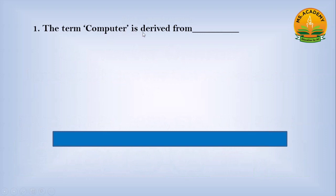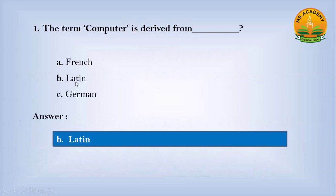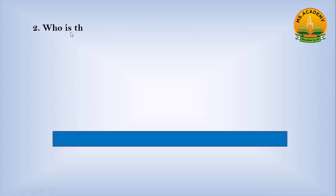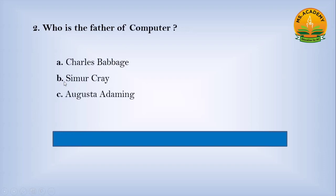The term 'computer' is derived from — option A: French, option B: Latin, option C: German. Answer: B — Latin. Who is the father of computer? Option A: Charles Babbage, option B: Seymour Cray, option C: Augusta Admin. Answer: A — Charles Babbage.